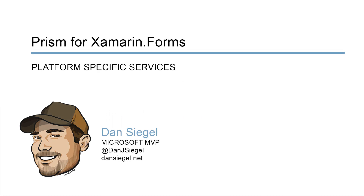If you've been around the Xamarin world for a while, you know that at some point you need to write some platform-specific code. It can be hard, and you may be wondering how do you use this platform-specific code from a shared .NET Standard library. In this video, we'll take a look at the iPlatform Initializer and how you can use it to inject platform-specific services into your codebase with Prism.